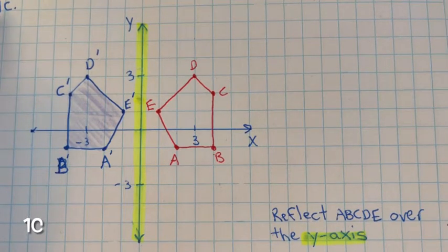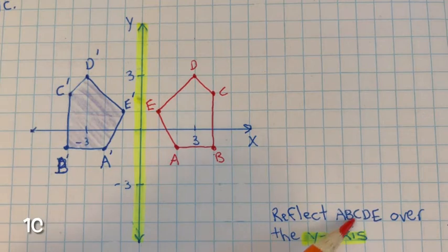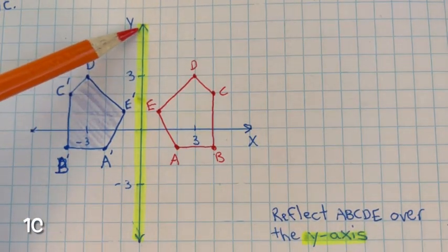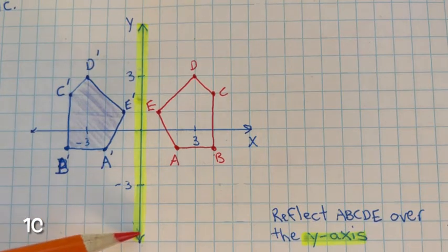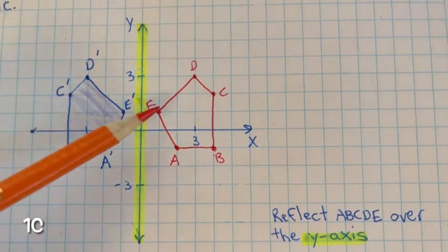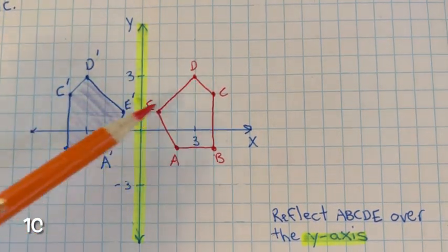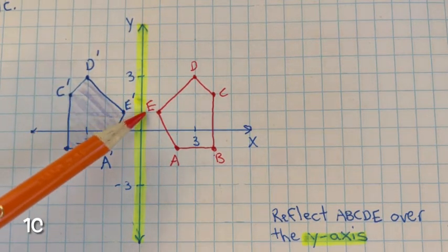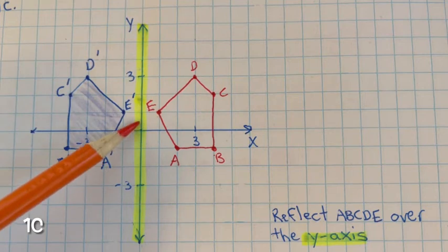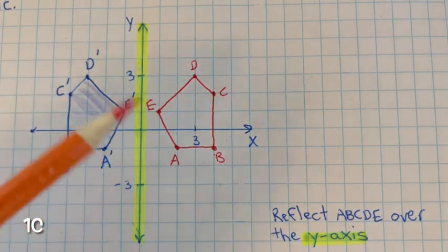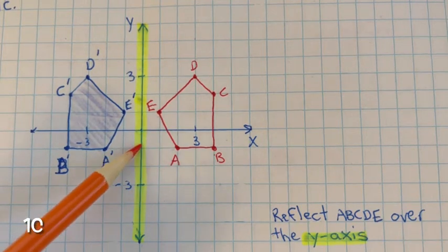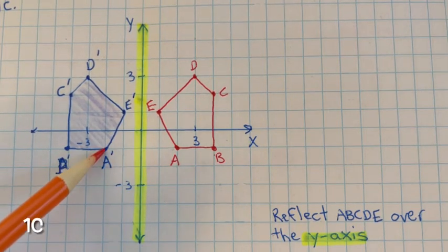For problem 1c, we need to reflect figures a, b, c, d, e over the y-axis. So now I'm highlighting the y-axis to remind myself that all of these vertices are going to be reflected or flipped over to the other side, equidistant from the line of reflection. A is 2 units to the right, so a prime would be negative 2 units to the left.